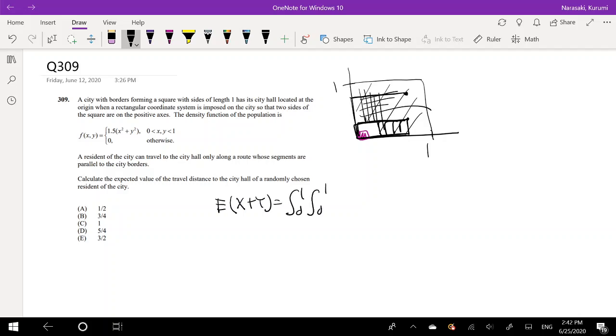Well we know the range is 0 to 1 for both x's and y, right, because it's a square. And the probability density function is given as 1.5 x squared plus y squared.